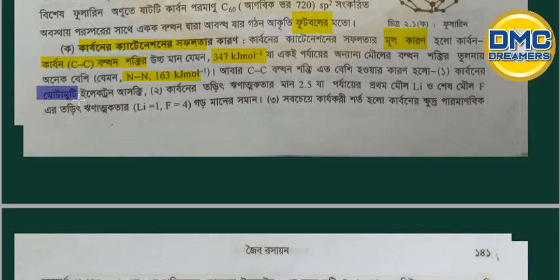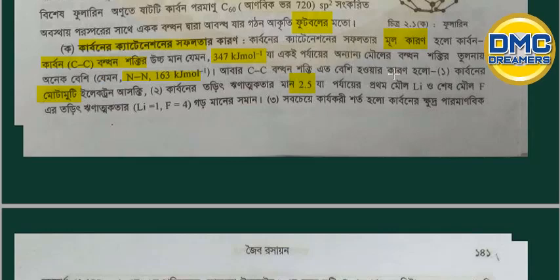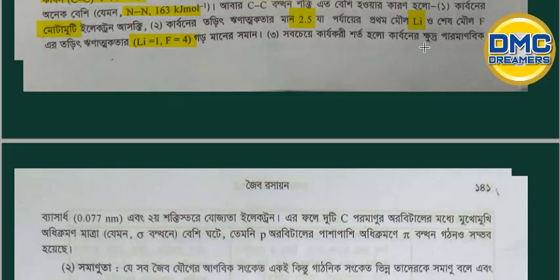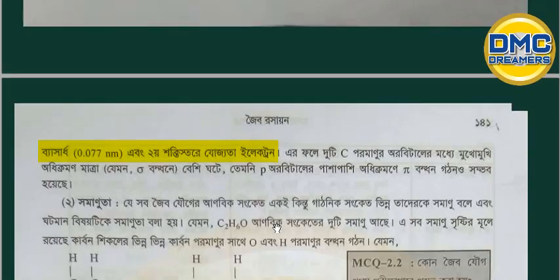The carbon electronegativity is approximately 2.5. For comparison, lithium is around 1.0, fluorine is higher, and carbon sits at 2.5. So carbon's electronegativity value is 2.5, which is relevant when comparing it to other elements such as nitrogen and oxygen.